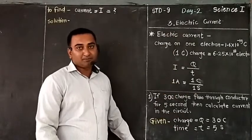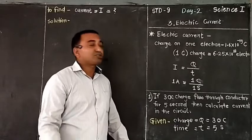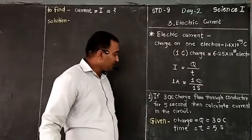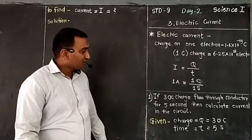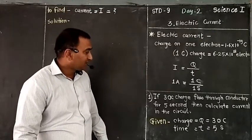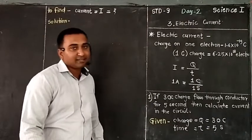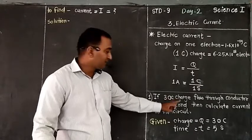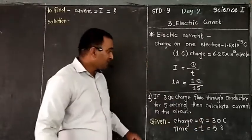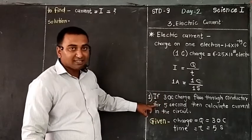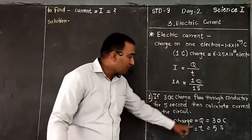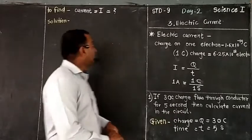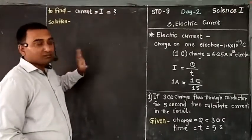That much we discussed in the last session. Today we are discussing some more information about electric current — first of all, some numericals. For example: if 30 Coulomb charge flows through a conductor for 5 seconds, then calculate the current in the circuit. What is given? Charge flowing through the conductor is 30 Coulomb, and the time taken is 5 seconds. We have to find current — I is equal to question mark.